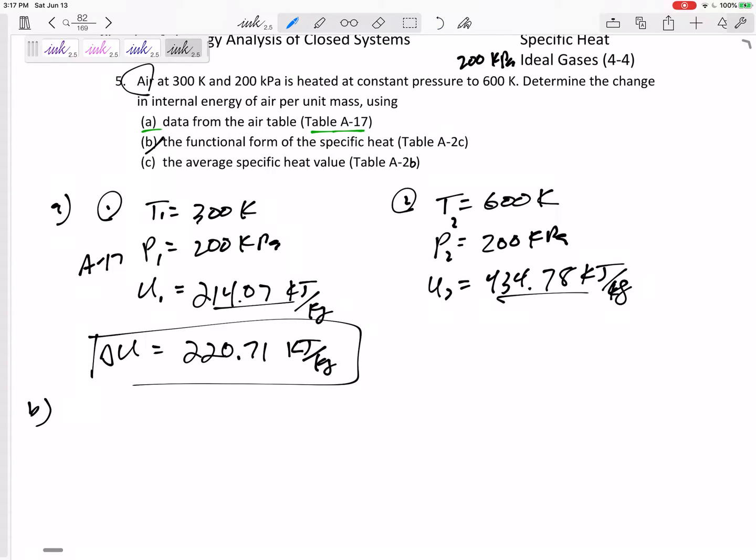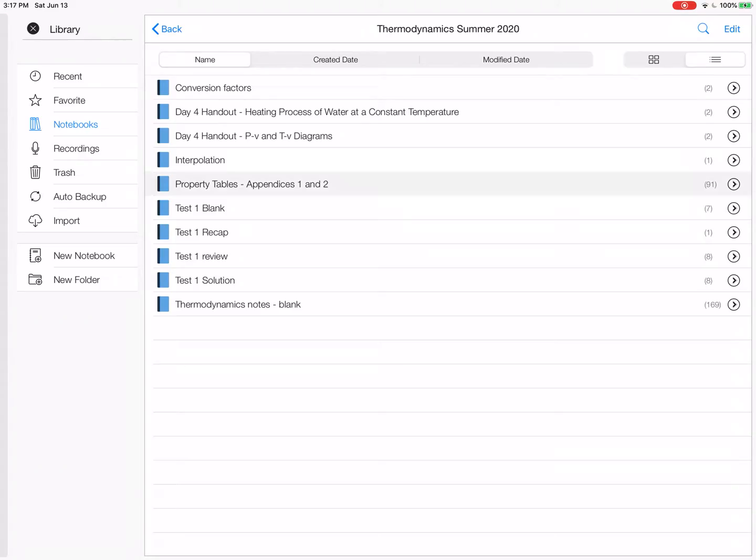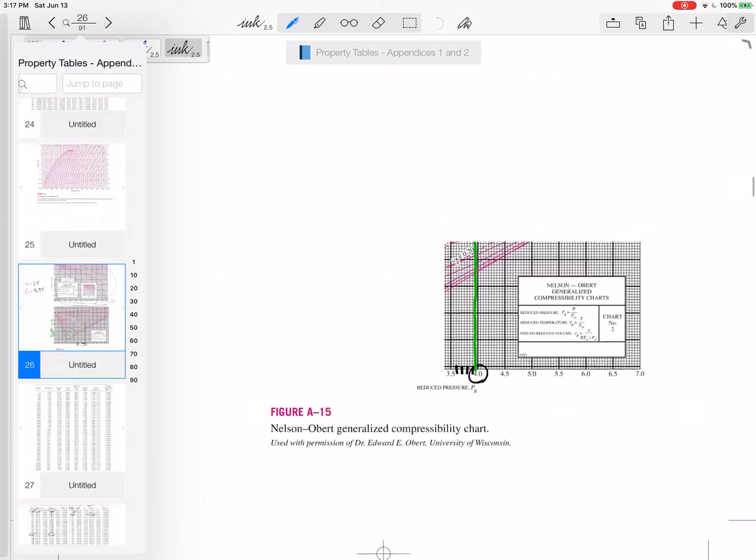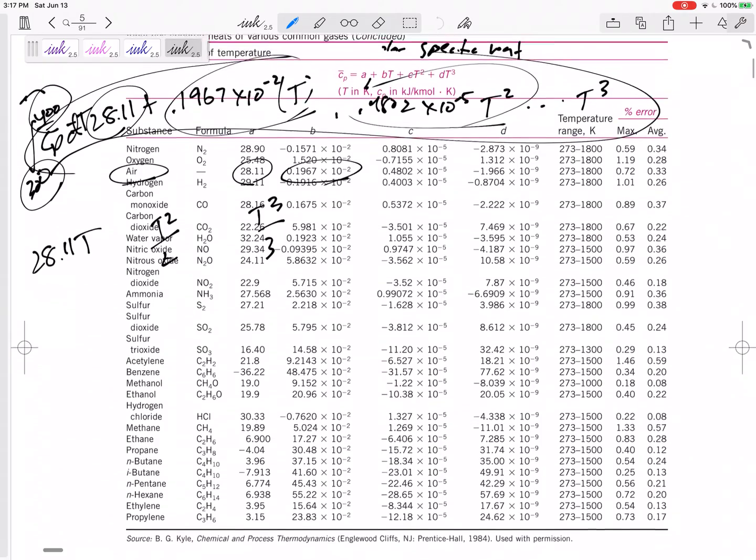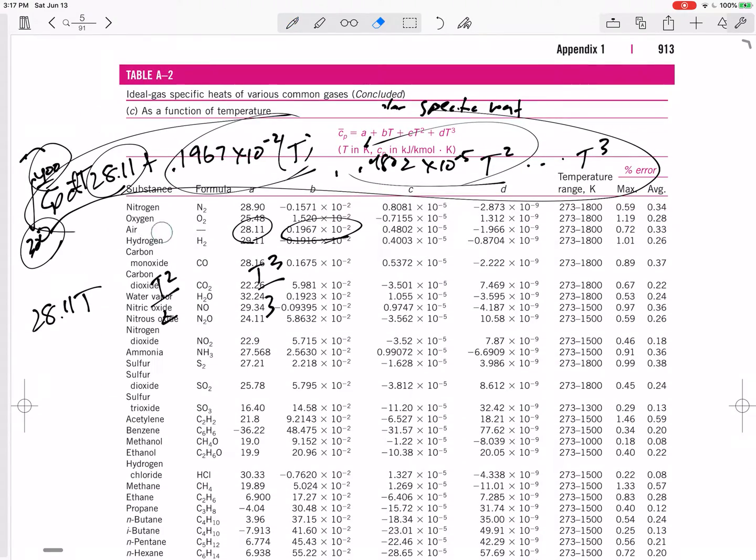Using method B, the functional form in Table A2C. We'll go to Table A2C for air and we will use that equation, use that value. This table right here for air, which we've been looking at in the previous video.